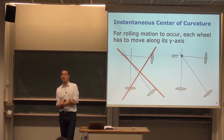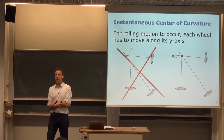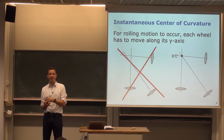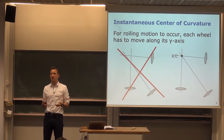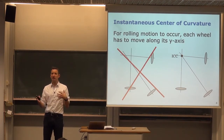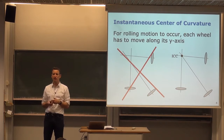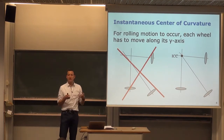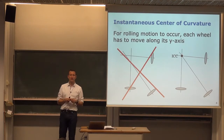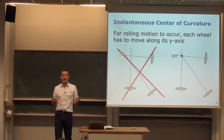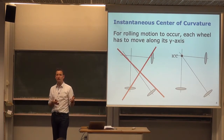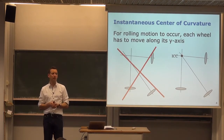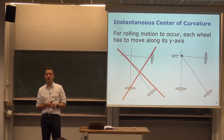It depends on how many wheels you have and how many degrees of freedom you have. Sometimes you can set velocities but must take into account constraints — called error velocities that should be zero. Sometimes the ICC is generated naturally depending on your drive, which we will explore in a few minutes.